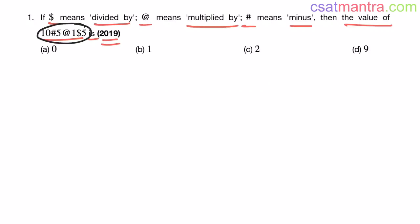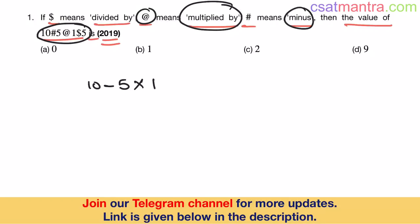Now rewriting this expression: 10 hash. Hash means minus my friends. 10 minus 5. At means multiplied by, multiplied by 1. $ means divided by. Divided by 5.